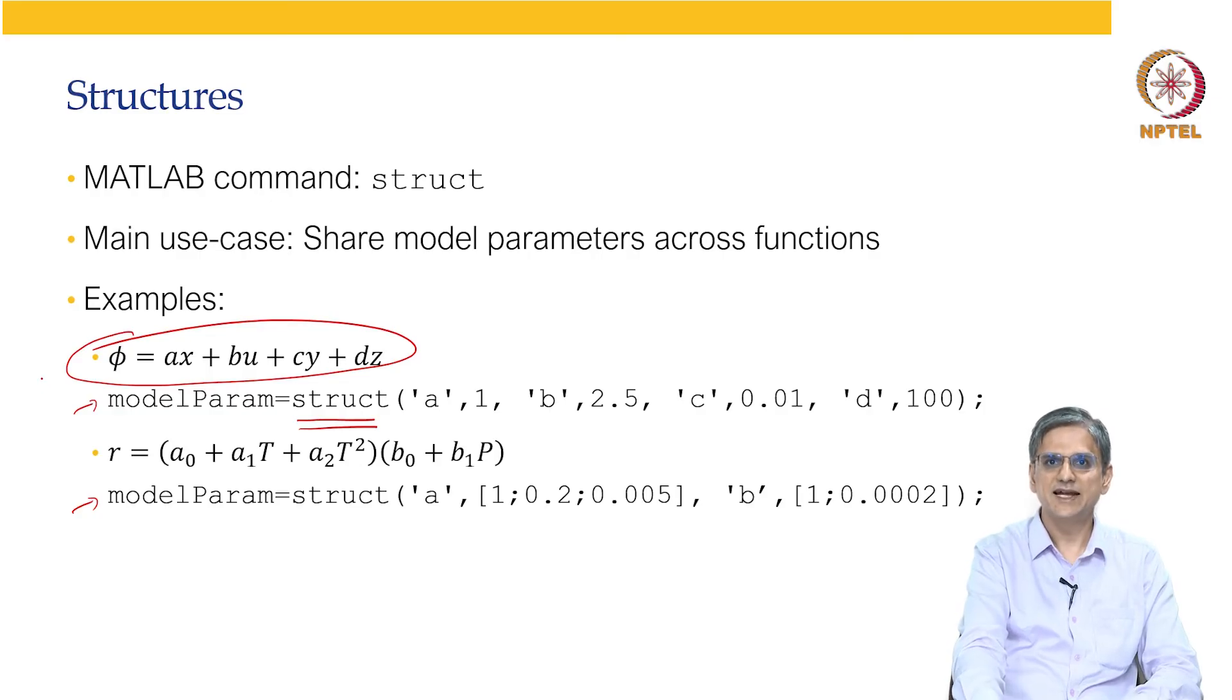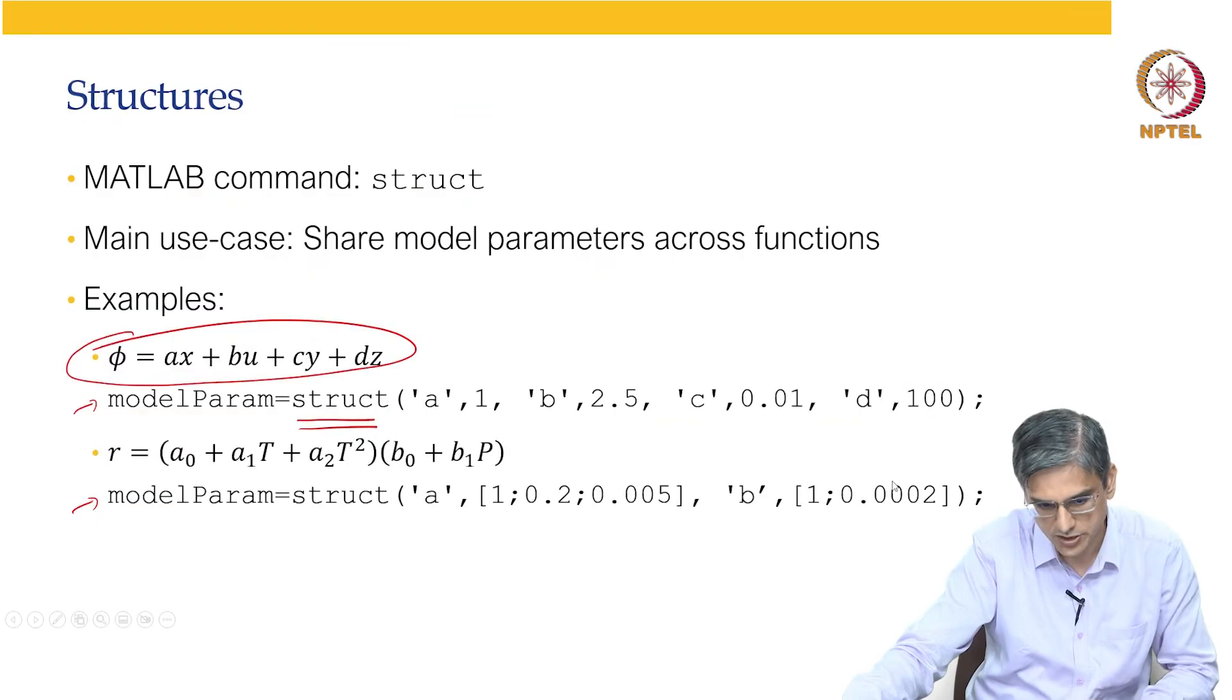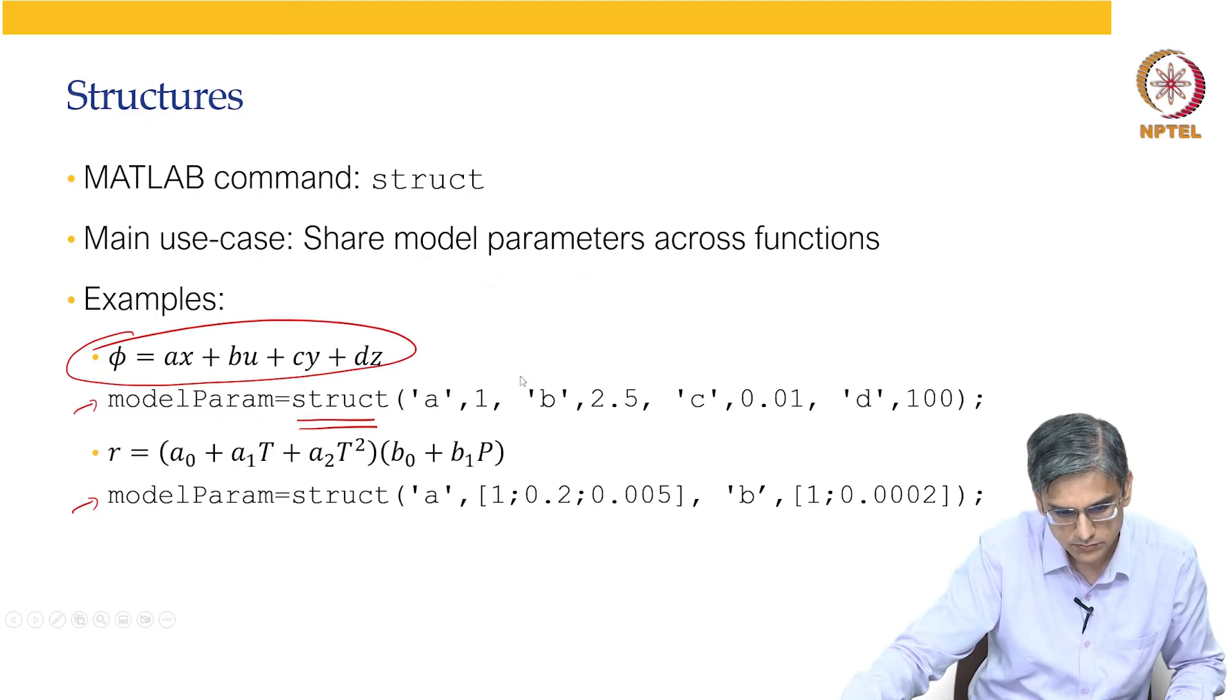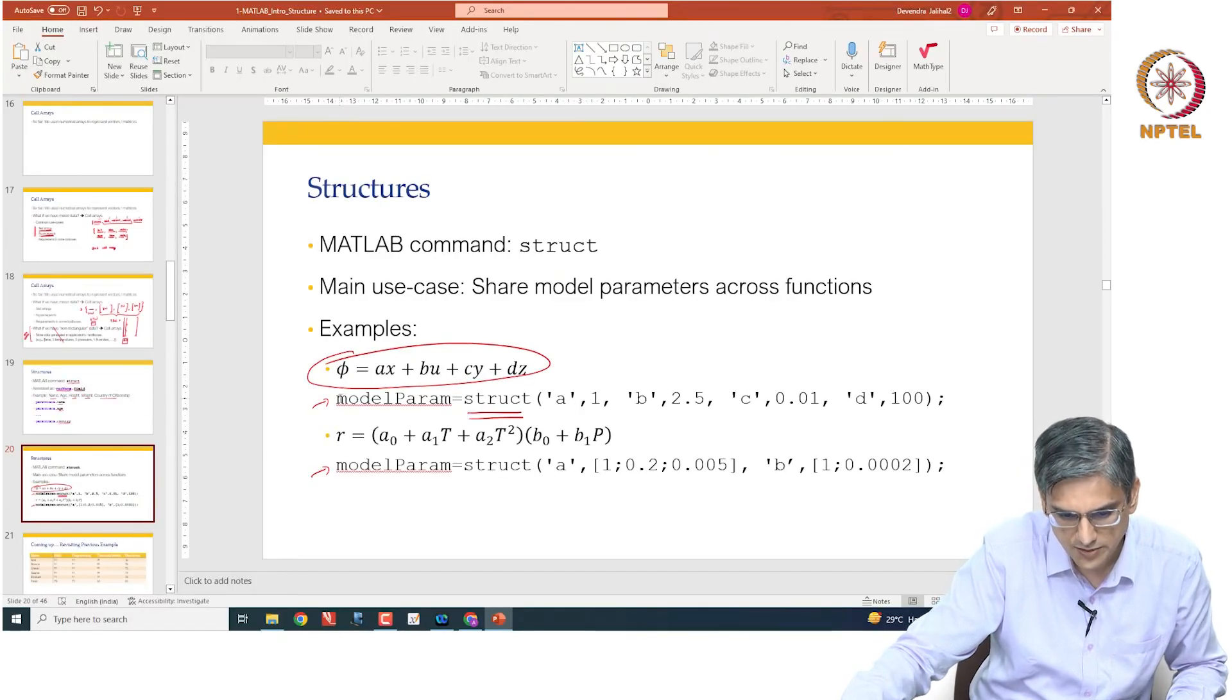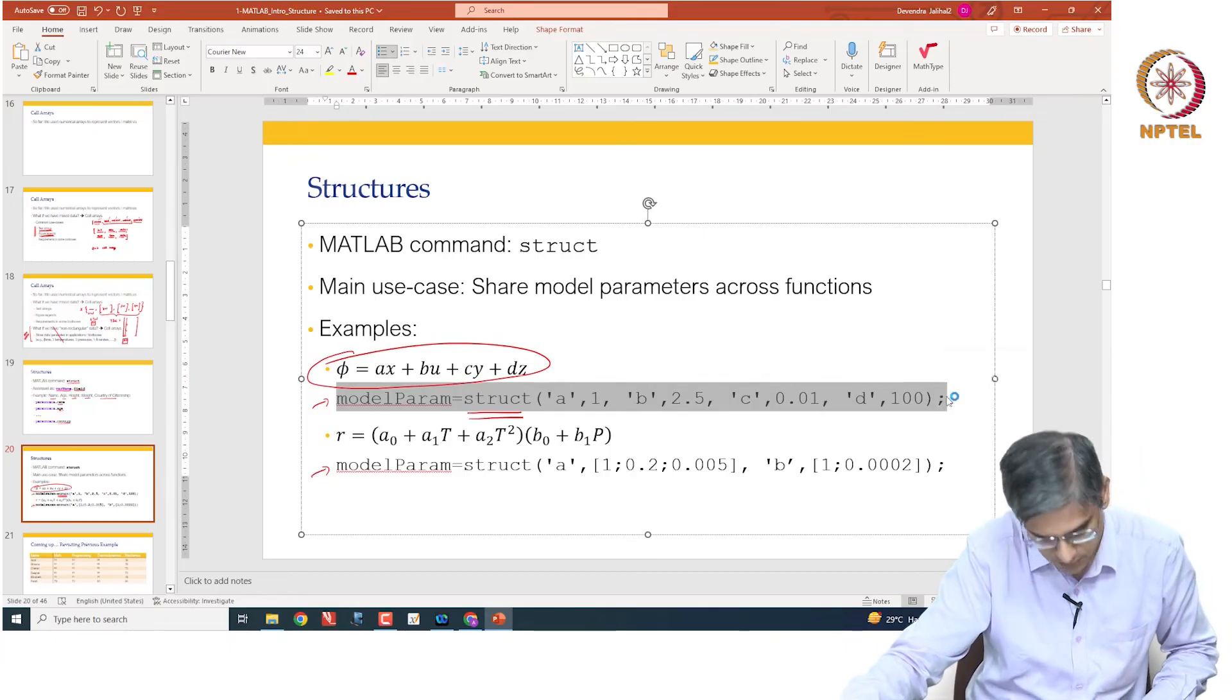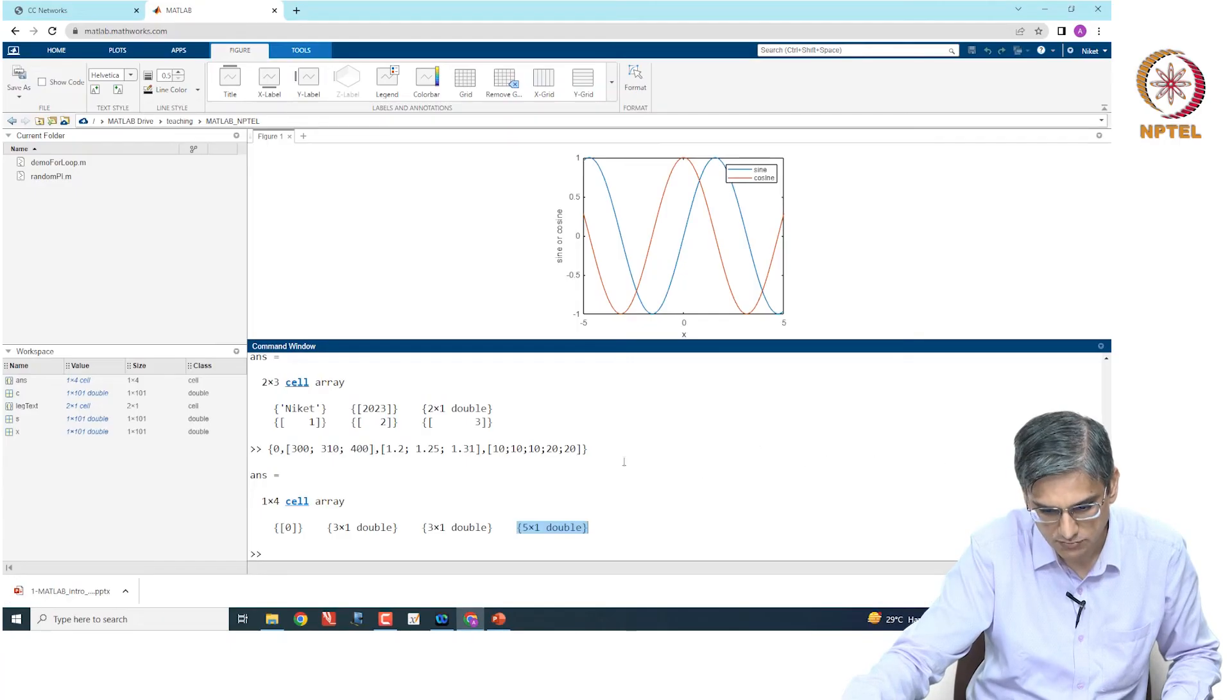Let us say we have a model of this nature: phi equal to Ax plus Bu plus Cy plus Dz. x, u, y and z are variables, a, b, c and d are structures. In which case, we are going to use a code that is given over here to get the model structure. Let me copy this in order to demonstrate to you in MATLAB.